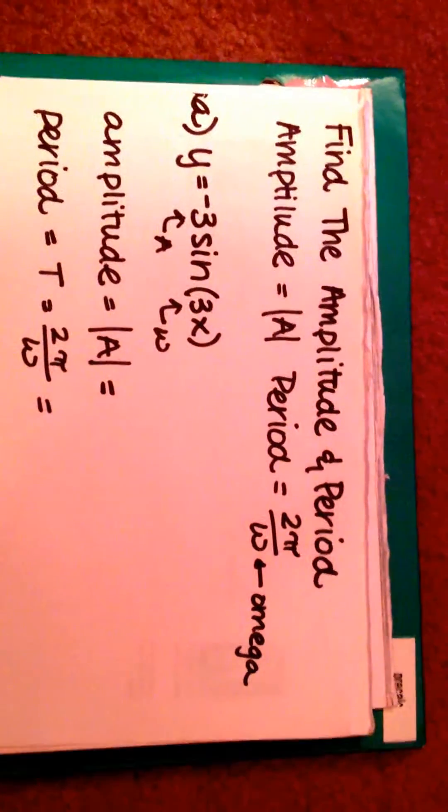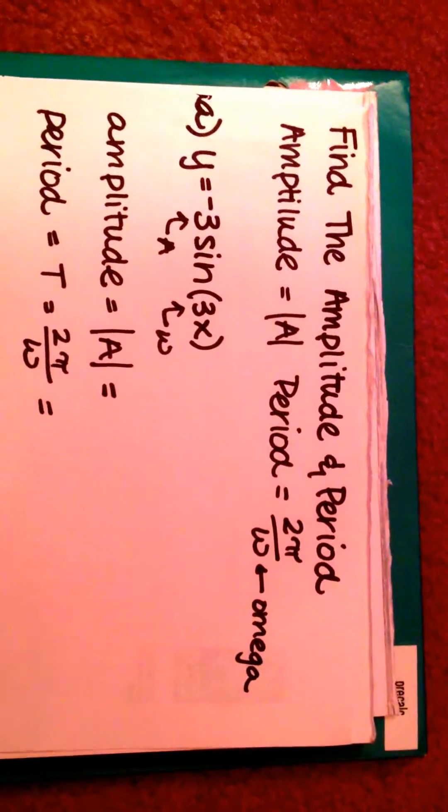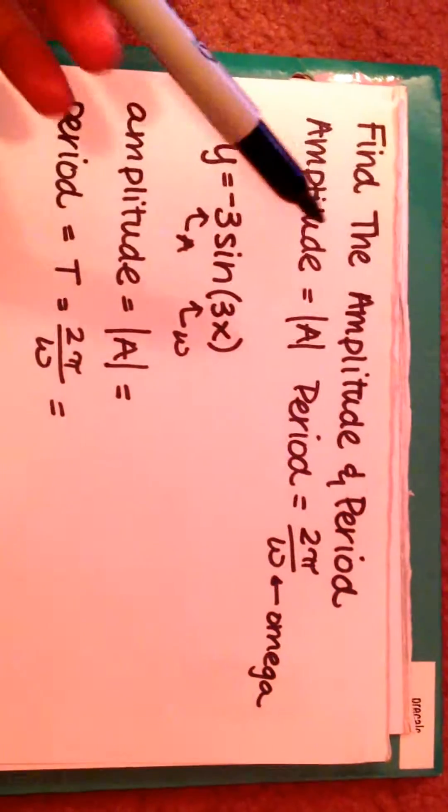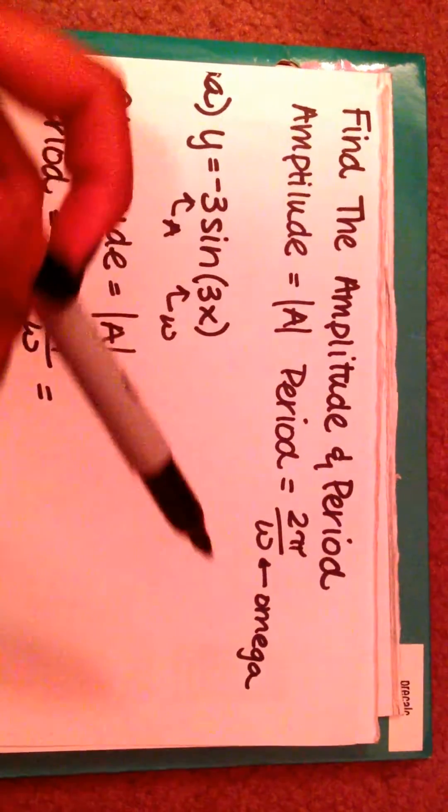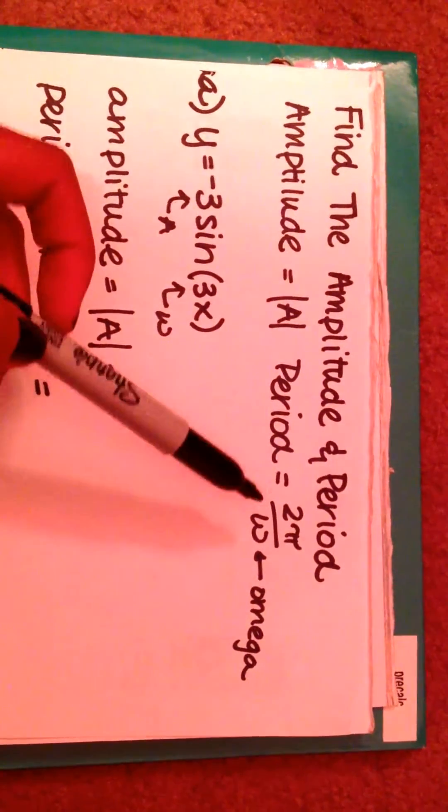This is a problem from practice test number four. We have to find the amplitude and the period of each. Amplitude equals the absolute value of A. Period equals 2 pi over omega, which is the little W-looking sign.